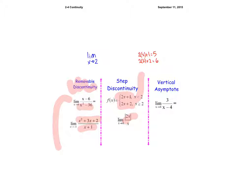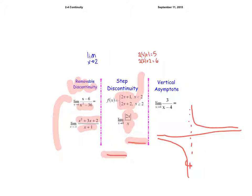For the last example, when you plug in negative values they come out positive but the sign makes it negative, so you end up at negative two. When you plug in positive values both are positive, giving positive two. This is also a vertical asymptote discontinuity because the left and right hand sides do not agree — the limit doesn't exist and the function doesn't exist at that point either.